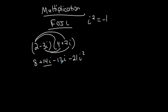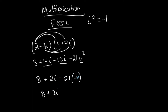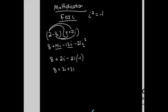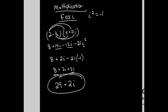Now I just simplify. These are like terms: positive 14i minus 12i gives me 8 plus 2i minus 21i squared. i squared equals negative 1, so I replace it: this last term becomes negative 21 times negative 1, or positive 21. Now I have two more real-part like terms: 8 plus 21 is 29. So my final product is 29 + 2i. Every operation on complex numbers should always end up in standard form a + bi with no powers on i.